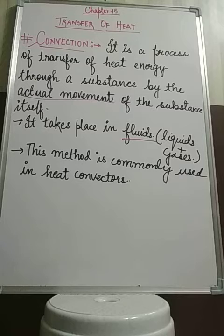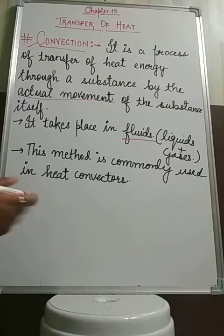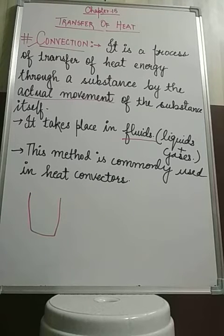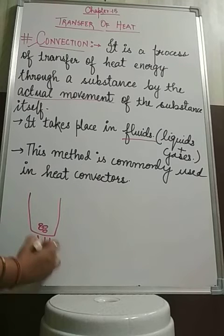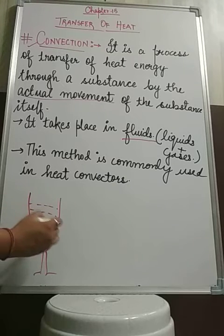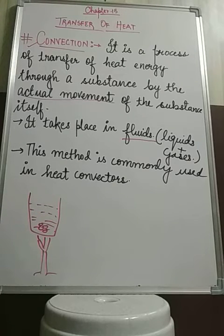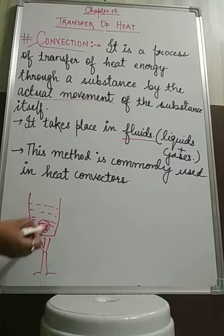There is an activity to understand the process of convection. You need to take a beaker, crystals of potassium permanganate, a burner, and water. Fill the beaker with water. Drop some crystals of potassium permanganate at the bottom of the beaker. Then start to heat it with a little flame just below the crystals — if the crystals are placed here, the flame should also be there.